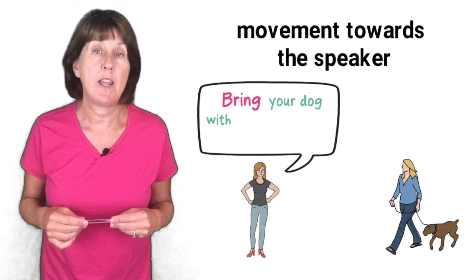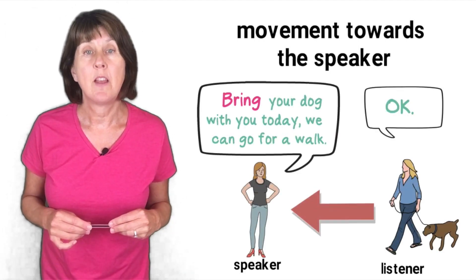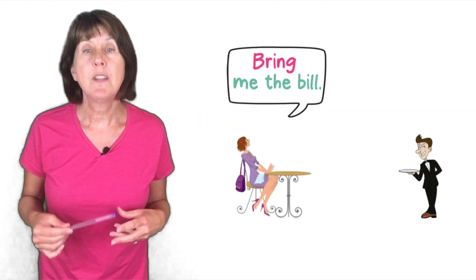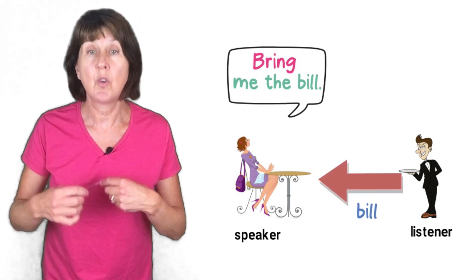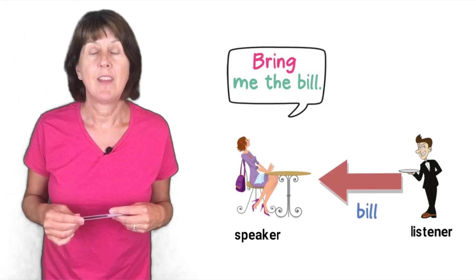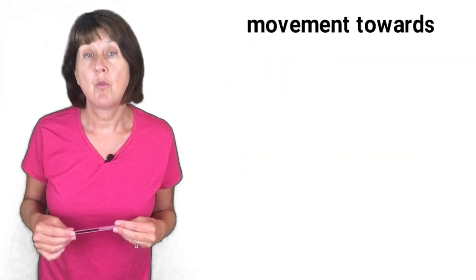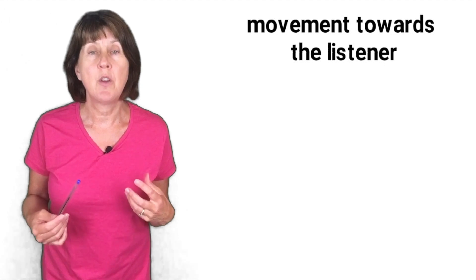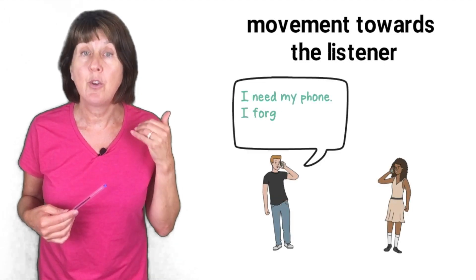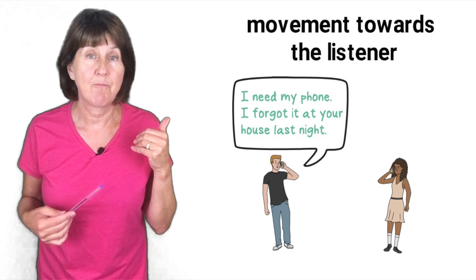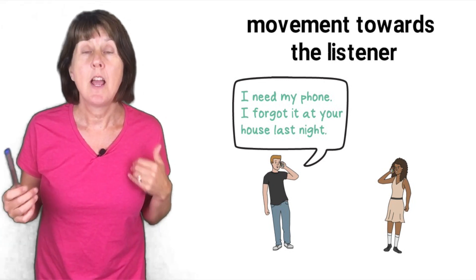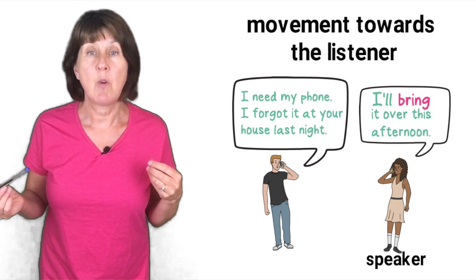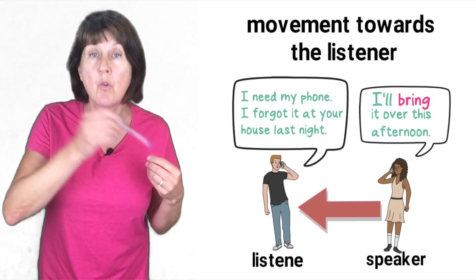Here is an example of movement towards the speaker: 'Bring your dog with you today, we can go for a walk.' Or 'Bring me the bill' in a restaurant. The movement is from where the listener is towards the speaker. Here is an example of movement towards the listener: imagine you're on the phone and you say 'I need my phone, I forgot it at your house last night,' and the other person replies 'I'll bring it over this afternoon.' The movement is from where the speaker is towards the listener.